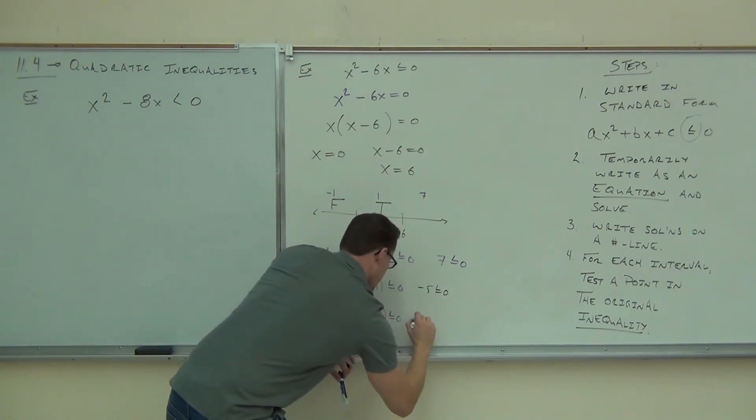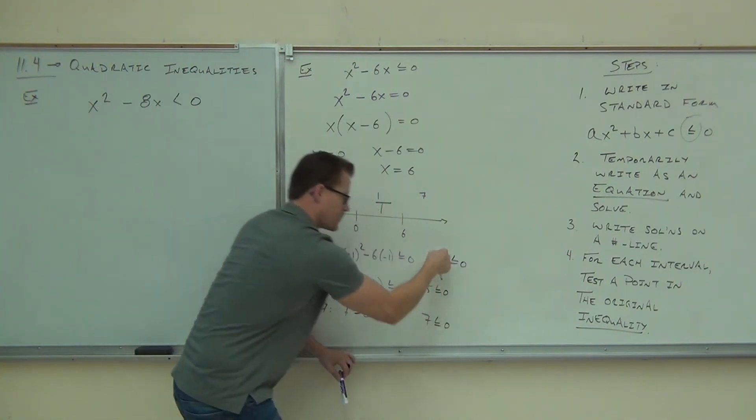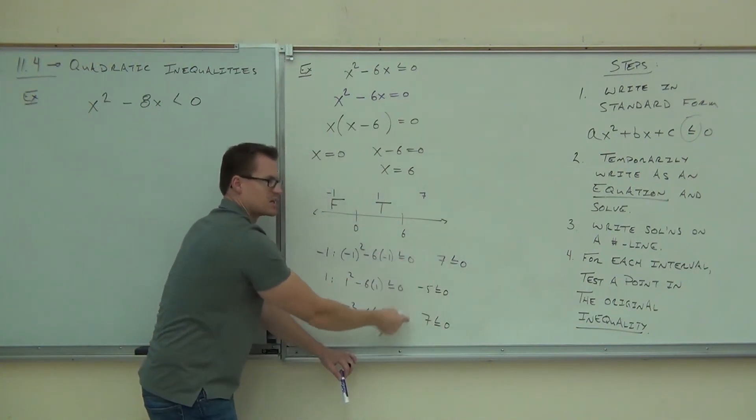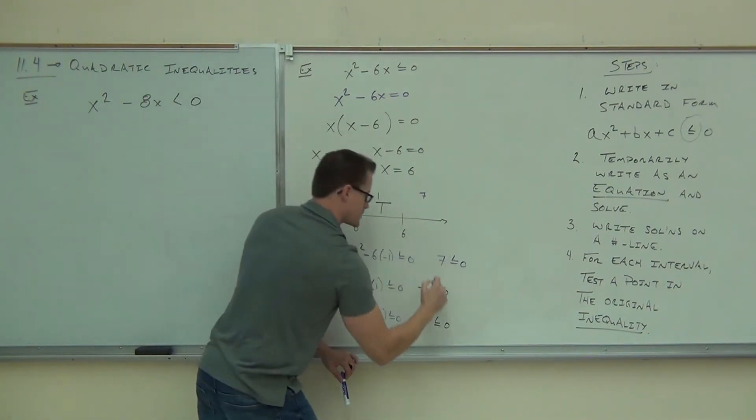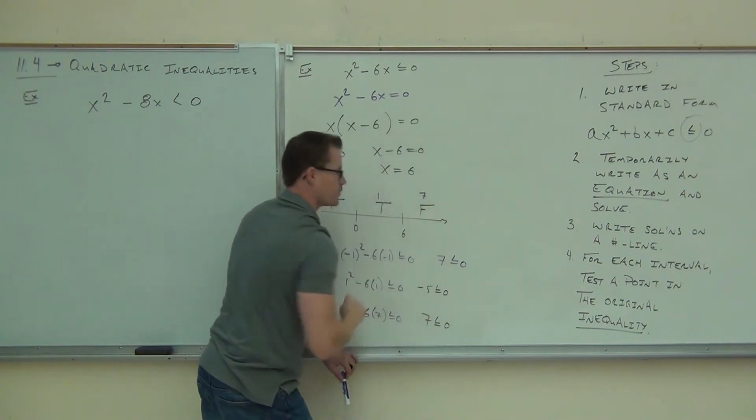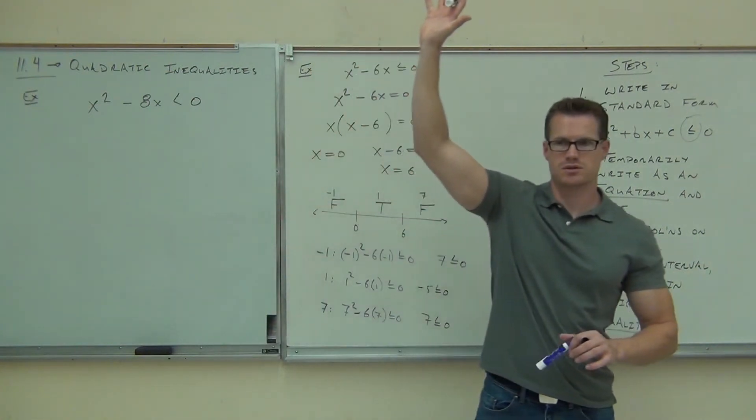So we're going to get 49 minus 42, that's going to give you 7 again. Notice still, we have that relationship. They're the same exact number. If you pick one unit away in each case, it's symmetrical. It's going to give you that relationship. That's definitely false. We get a false for that interval.